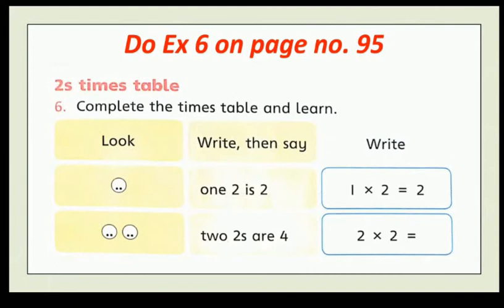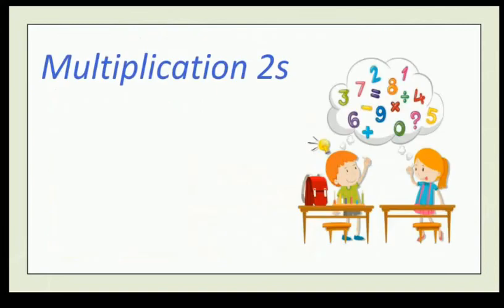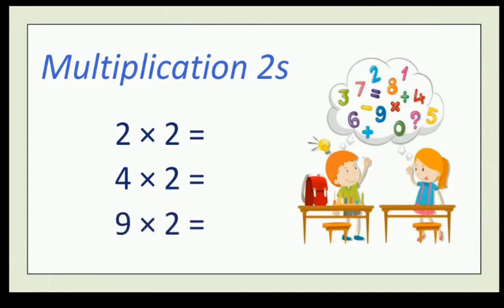Now open page number ninety-five and do exercise six in your book. Complete the times table and learn. Multiplication twos: two multiply by two is equal to four, three multiply by two is equal to six, nine multiply by two is equal to eighteen. Two twos are four, four twos are eight, and nine twos are eighteen. Now learn the table.